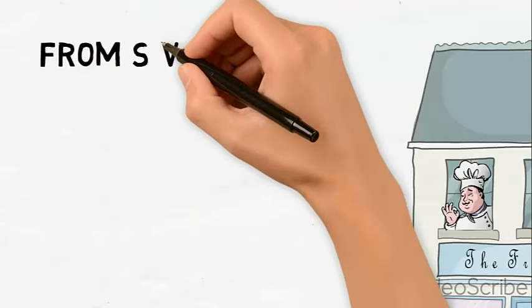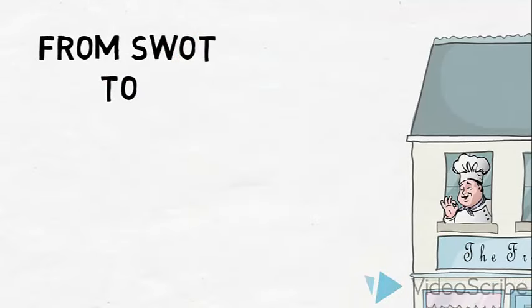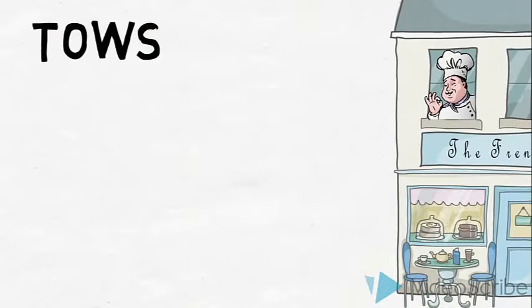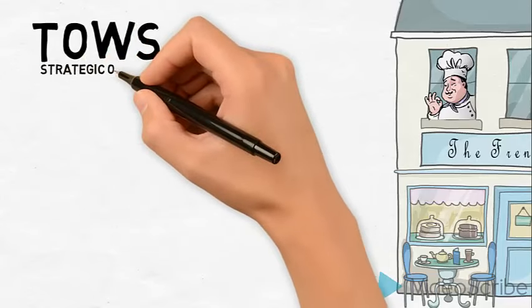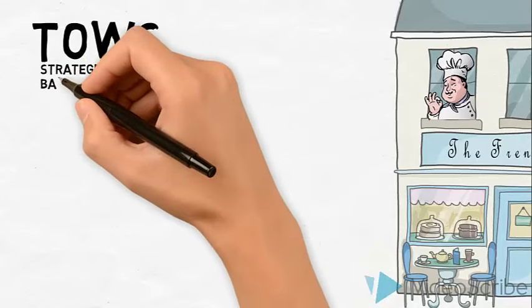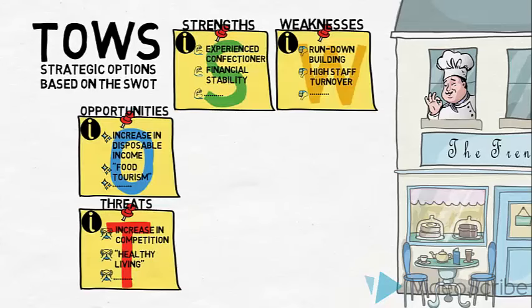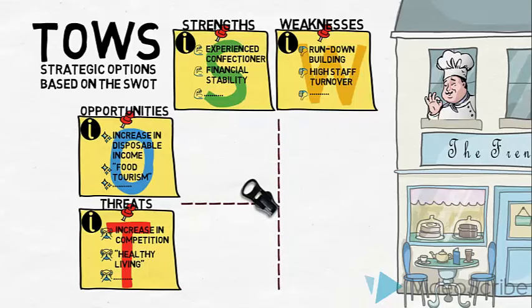Now let us make the move from the SWOT to the TAOS. The purpose of the TAOS is to come up with possible strategic options based on the findings in the SWOT. We start by bringing in the SWOT and placing the four areas, then we create four squares in the middle — these will serve as our framework for creating strategic options.